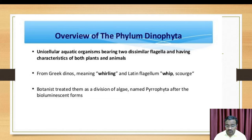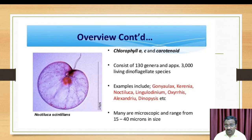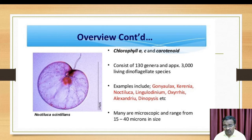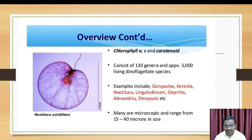Dinoflagellates produce bioluminescence, which is one of their unique features. They also contain chlorophyll pigments — chlorophyll a, chlorophyll c — and carotenoids. There are approximately 130 genera and 3,000 living dinoflagellate species reported recently between 2017 and 2019 in a reputed journal.